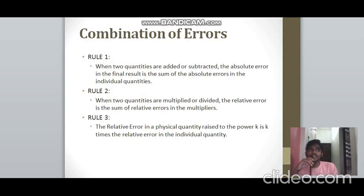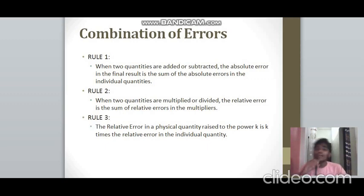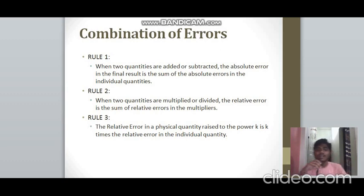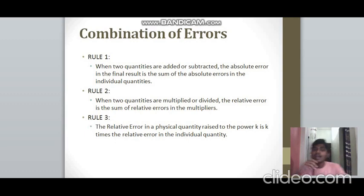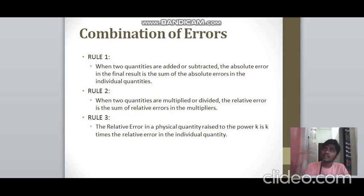For combination of errors: when two quantities are added or subtracted, the absolute error in the result is the sum of the absolute errors in the individual quantities — so ±0.02 and ±0.04 gives ±0.06. For multiplication and division, the numerical values are multiplied or divided normally, but the errors are added — not multiplied. For example, (8 ± 2) × (6 ± 4) = 48 ± 6. When a physical quantity is raised to power k, the relative error is k times the relative error in the individual quantity.